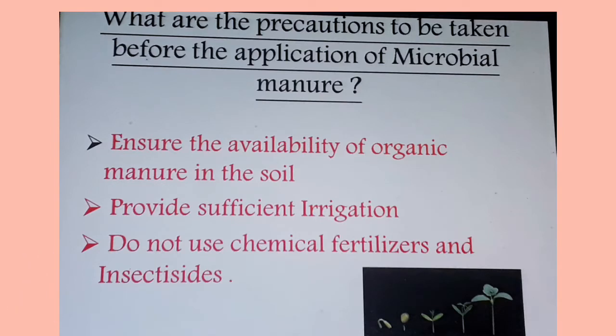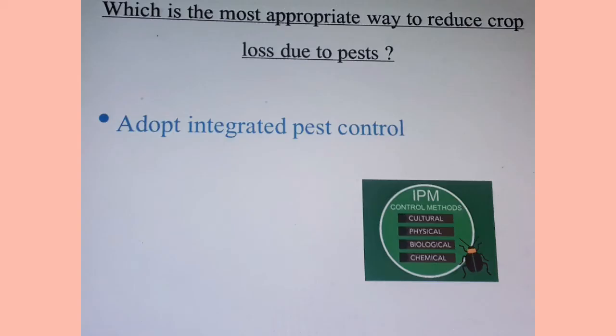What are the precautions to be taken before the application of microbial manure? Ensure the availability of organic manure in the soil, provide sufficient irrigation, and do not use chemical fertilizers and insecticides. Which is the most appropriate way to reduce crop loss due to pests? Adopt integrated pest control.